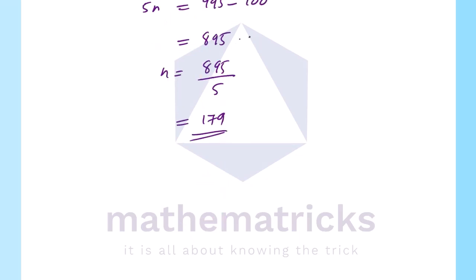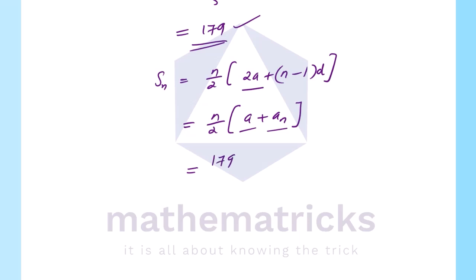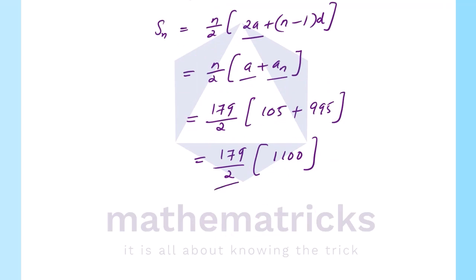With n equals 179, we apply the sum formula: S_n equals n by 2 into a plus a_n, that is first term plus last term. So the sum equals 179 divided by 2 into 105 plus 995. This equals 179 by 2 into 1100, giving a final answer of approximately 98,450.